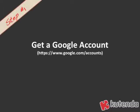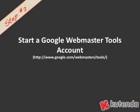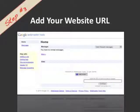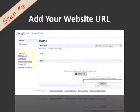Step number one, you need to get a Google account. If you have a Gmail account, you already have a Google account. If you don't, just go to google.com/accounts and you can get signed up there. Once you have your Google account and you're logged in, go to google.com/webmaster/tools and you'll be taken to a page to add your first website. All you have to do is add the URL of your website.